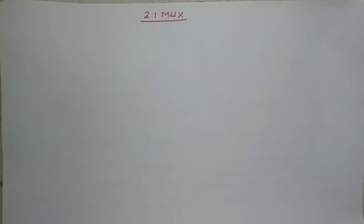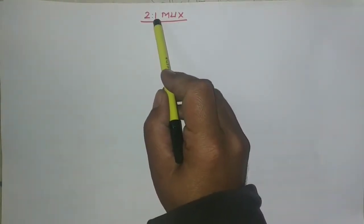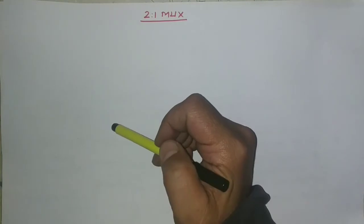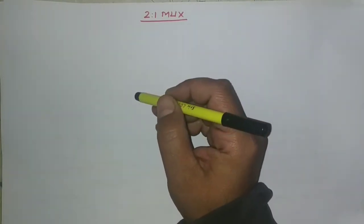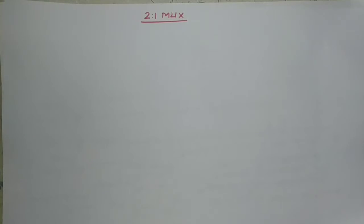In today's lecture, we will discuss one of the basic multiplexers: the 2-to-1 ratio. In the previous lecture, we discussed all the details about the introductory part of multiplexers — the number of inputs, number of outputs, and according to the number of inputs, how many selection lines we require. We also discussed the multiplexer with the enable signal.